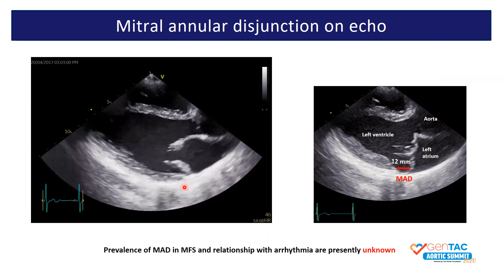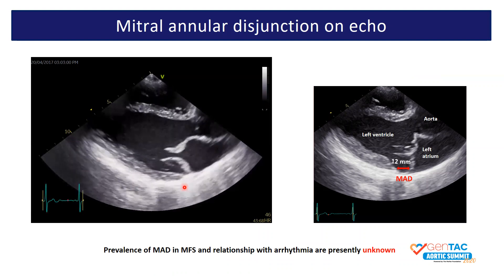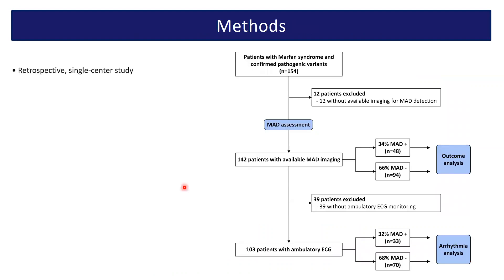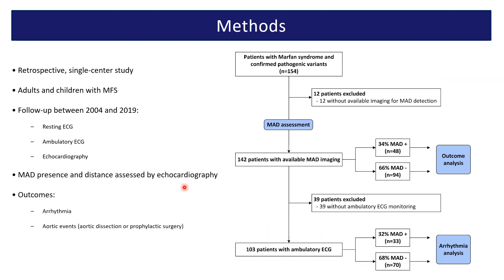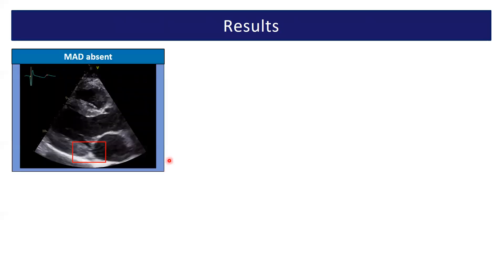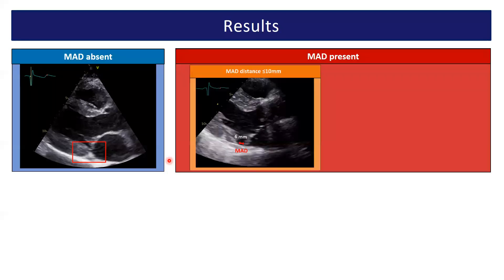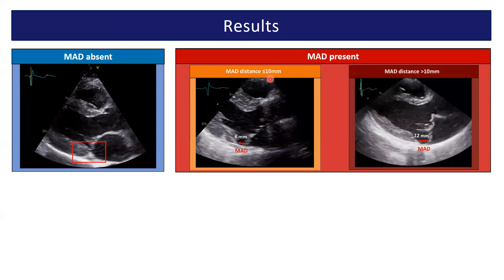Prevalence of MAD in Marfan syndrome and the relationship with arrhythmia are currently unknown. Therefore, we performed a retrospective single-center study including adults and children with Marfan syndrome who were followed up between 2004 and 2019. Both MAD present and distant were assessed. Outcomes included arrhythmia, aortic events, and mitral valve surgery. To define MAD severity, we performed a ROC curve analysis, classifying patients as MAD absent or MAD present, with a cutoff value below or equal to 10 mm versus patients above 10 mm.